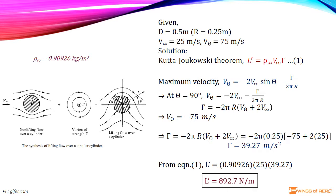Now, we have to find out the lift per unit span on the cylinder. From Kutta-Joukowsky theorem, we know that the lift per unit span is directly proportional to circulation. We can write L' is equal to ρ∞ into V∞ into Γ.